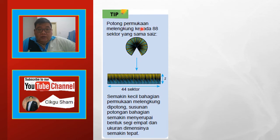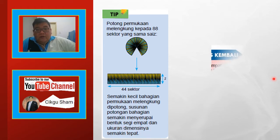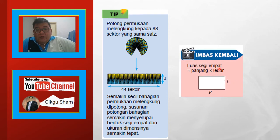Tip: potong permukaan melengkung pada 8 sektor yang sama saiz. Semakin kecil bahagian permukaan melengkung dipotong, sesuatu potongan bahagian semakin berperai bentuk segi 4 dan ukuran dimensinya. Itu hanya tip sahaja. Luas segi 4 ialah panjang darab lebar, P dan L.